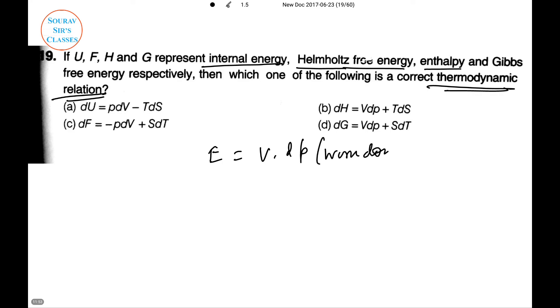Here E = V × dP, which is the work done. H, which is enthalpy, is E + TS. If we do dH, this is V dP + T dS. Hence we can see that the correct answer is option (b).